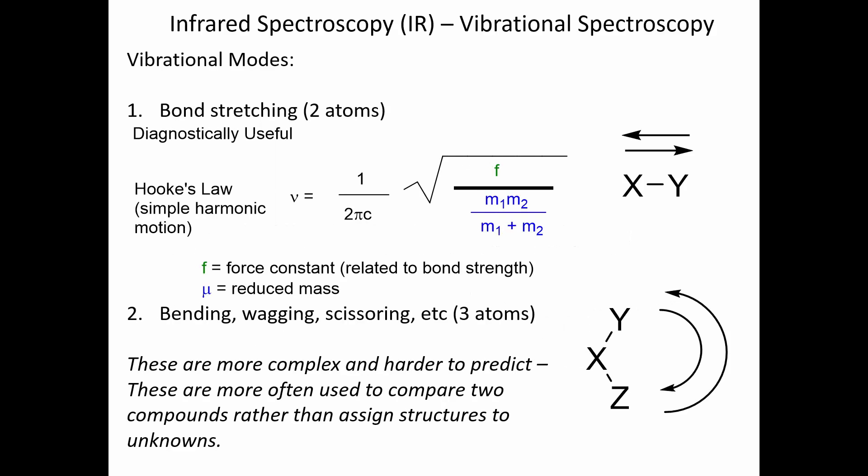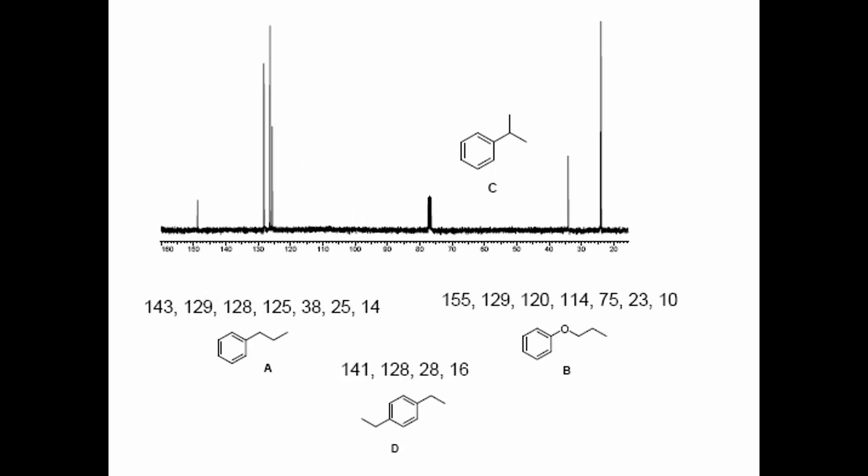This concludes the C-13 NMR section. What's unique about both proton NMR and C-13 NMR is that we try to account for every single signal in the spectrum. In the next video, we'll talk about all other forms of spectroscopy — infrared, mass, and ultraviolet spectroscopy — where we'll leave a lot of the spectral features uninterpreted.